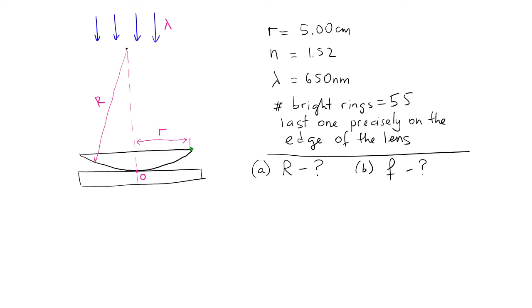If the bright ring is at the edge, we know the radius of that ring. Knowing the radius of that ring, we can find also the thickness of the air wedge between the convex lens and a flat glass. And if we know the thickness, let's call it T. So you can see if we construct a triangle.